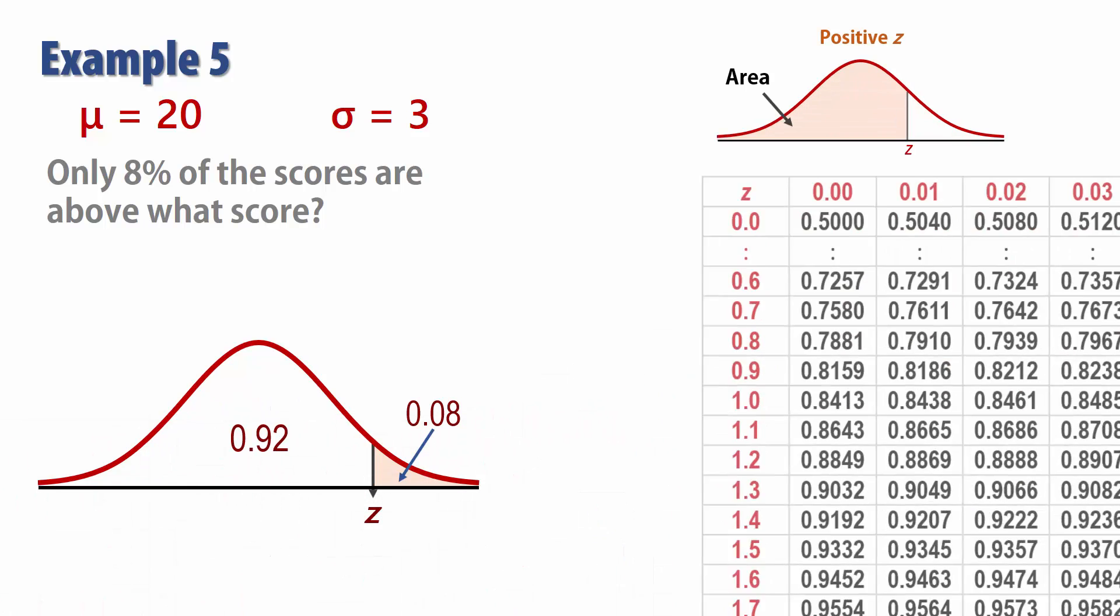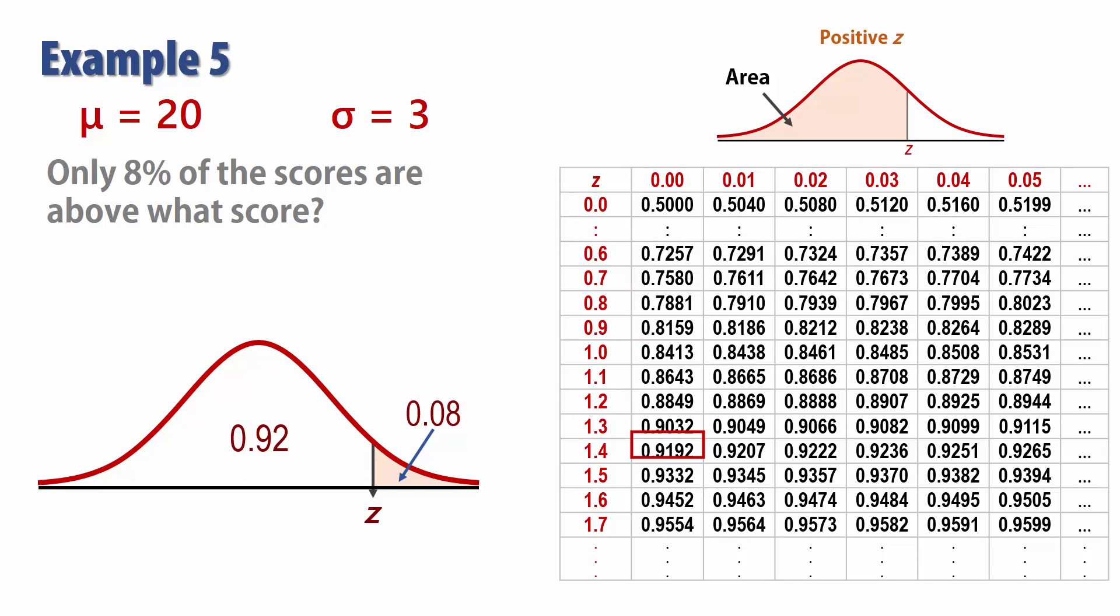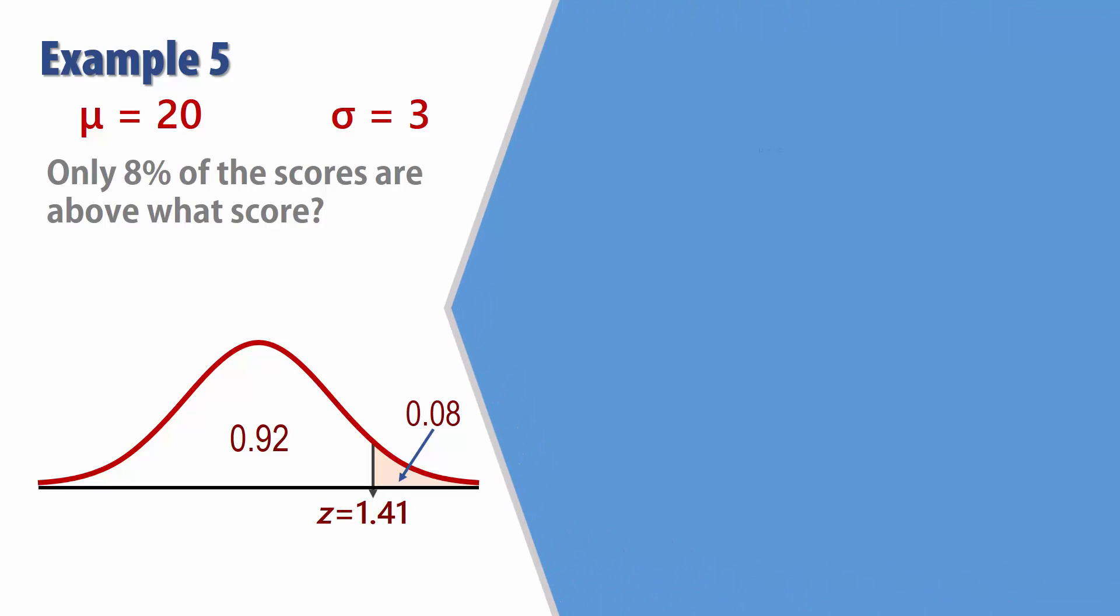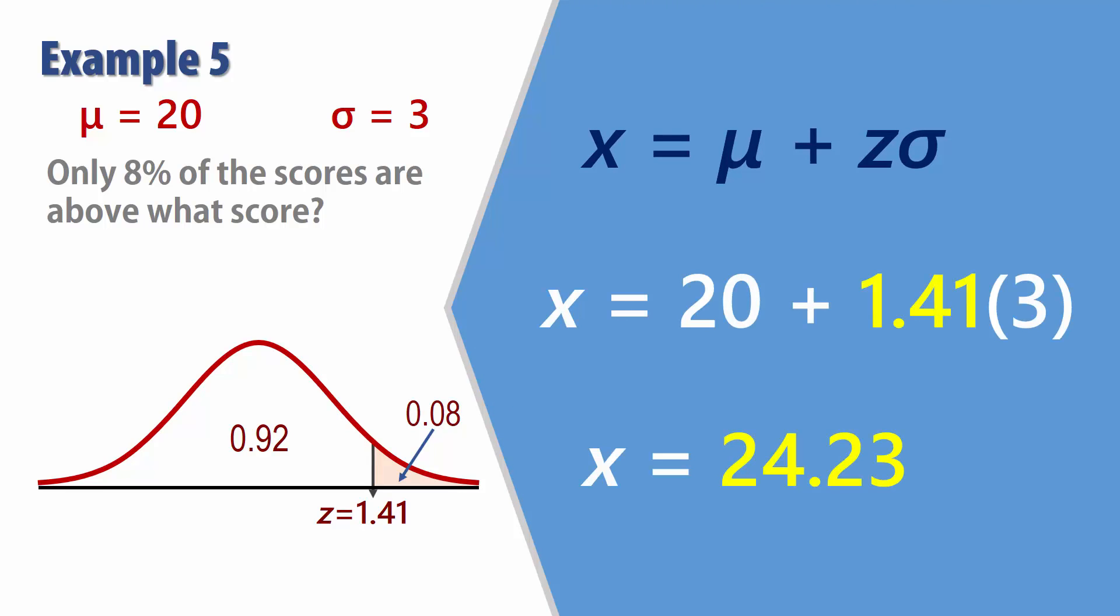We then search for the closest to 0.92 in the table. And the closest we find here is 0.9207, which corresponds to a Z score of 1.41. Substituting again in the X formula, we have X equals 24.23. That is, only 8% of the scores are above 24.23.